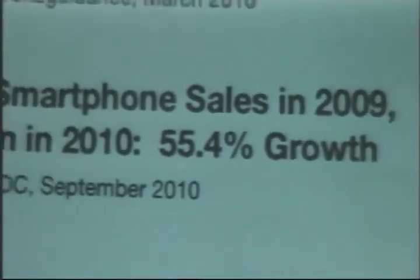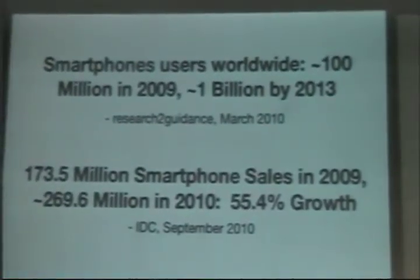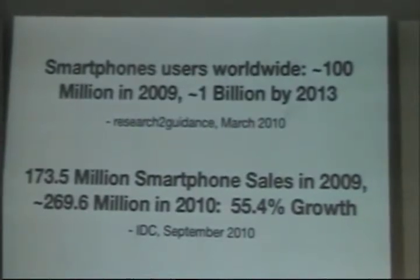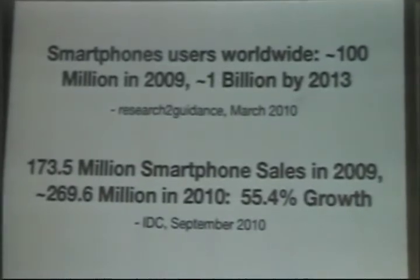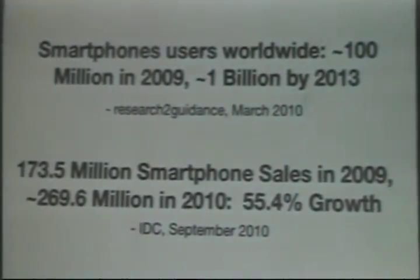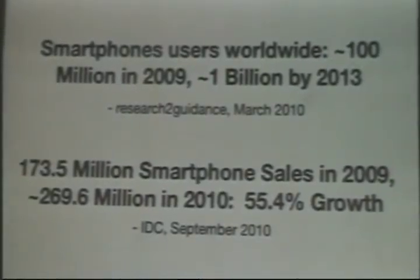Another study by Research2Guidance, released in March 2010, said that in 2009 there were 100 million plus smartphone users worldwide. But by 2013, they estimate 1 billion smartphone users — one out of seven people, since the UN projects 7 billion people in the world by then. Additionally, there were 170 plus million smartphone sales in 2009, and they estimate 270 million by end of 2010 — 55% growth. The smartphone platform is growing fast, definitely.